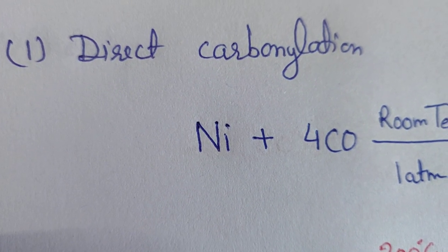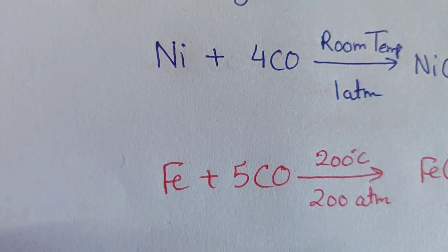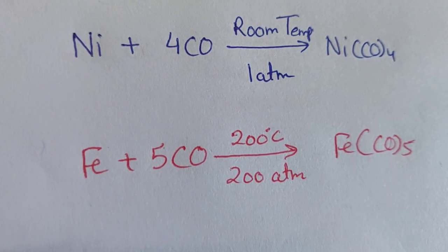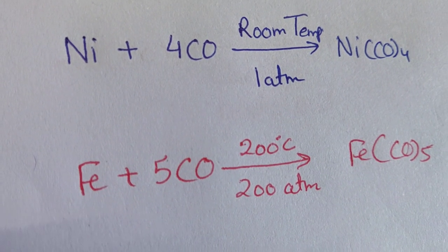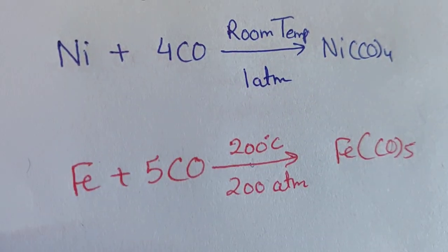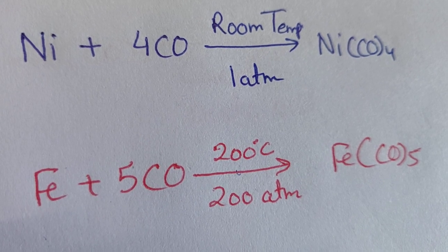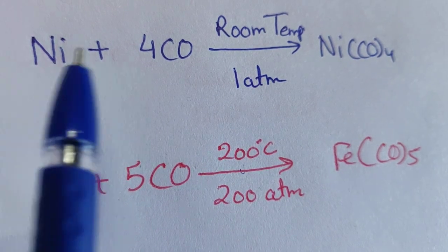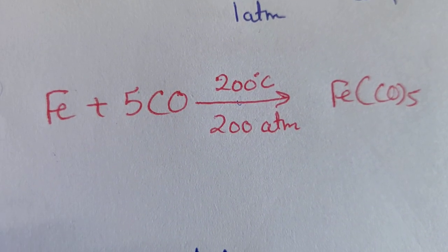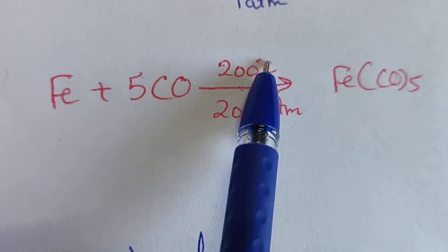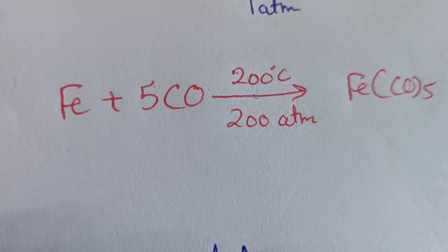The first method is direct carbonylation. Nickel and iron can directly react with carbon monoxide because they are already in the reduced metallic state. Nickel reacts with CO at room temperature and one atmospheric pressure to form tetracarbonyl nickel, Ni(CO)4. Iron reacts directly with CO but requires conditions of 200 degrees centigrade and 200 atm pressure to form pentacarbonyl iron, Fe(CO)5.